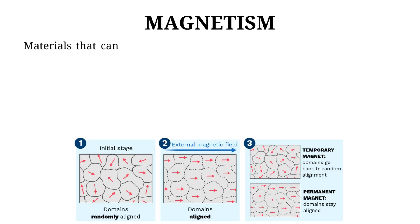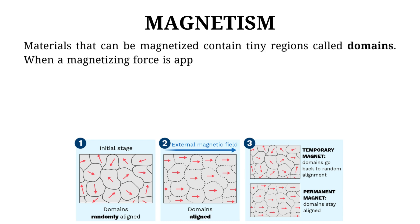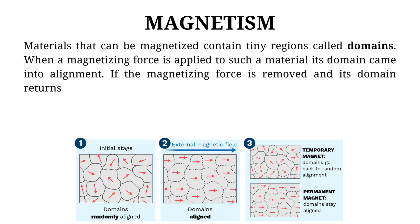Materials that can be magnetized contain tiny regions called domains. When a magnetizing force is applied to such a material its domain came into alignment. If the magnetizing force is removed and its domain returns to random alignment such a magnet is called temporary magnet.